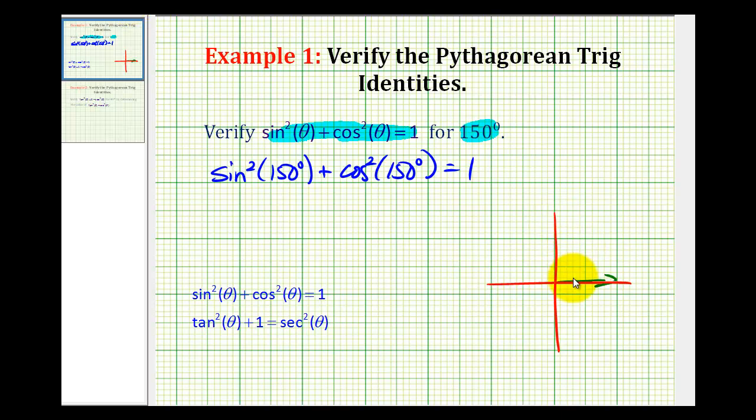So 150 degrees would be a counterclockwise rotation somewhere to here, leaving us with a reference angle of 30 degrees. A reference triangle would look like this, and by now we should know the relationship among these three sides: 1, 2, √3, where the x coordinate would be negative. This tells us that sin(150°) equals the ratio of the opposite side to the hypotenuse, which is ½, and cos(150°) is -√3/2.